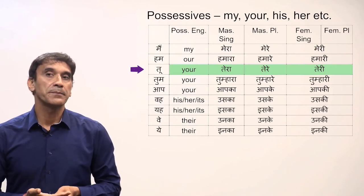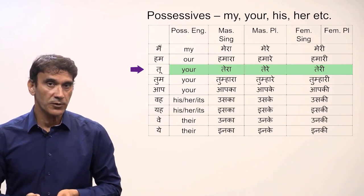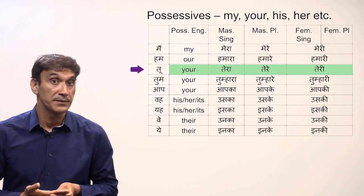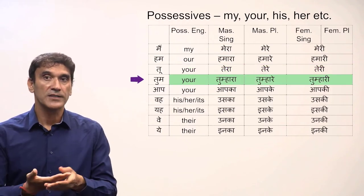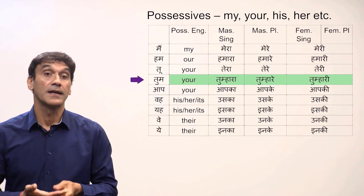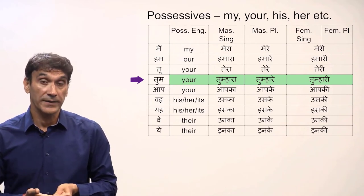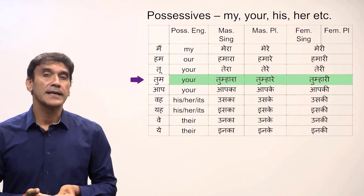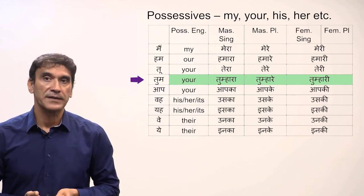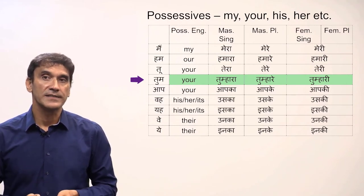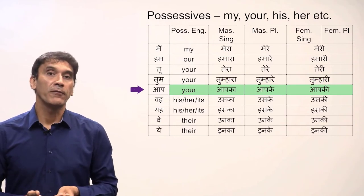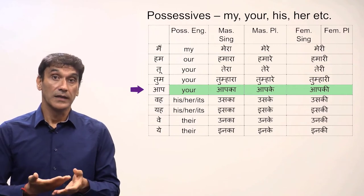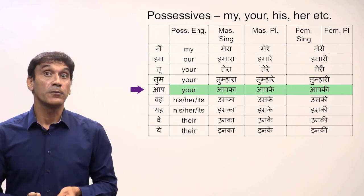As I mentioned in the previous grammar points, students should avoid the tu form. It is extremely informal and can be taken as rude behavior by the person addressed. For the second person plural, the possessive is tumhara, tumhare, tumhari — the English translation is 'your'. It is a little informal but still acceptable and can be used among friends. The most formal form for the second person is aapka, aapke, aapki — also meaning 'your'. Students are advised to use this form most of the time.